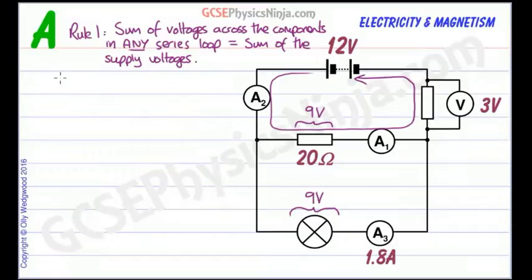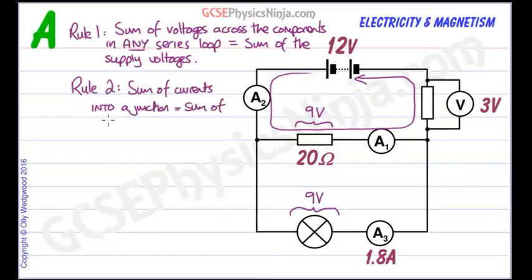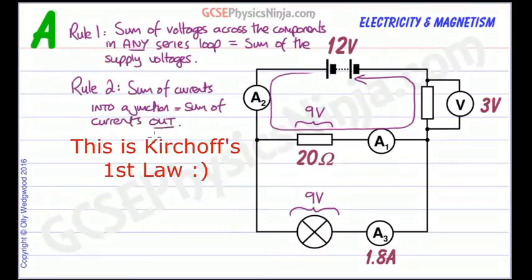So what about the second rule? Rule 2 says that the sum of currents into a junction equals the sum of currents out. It's kind of common sense, really.